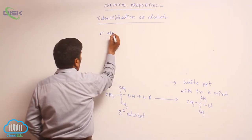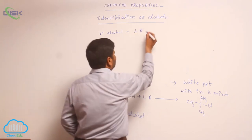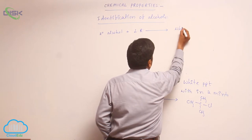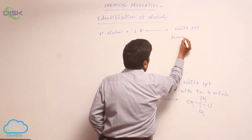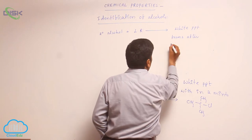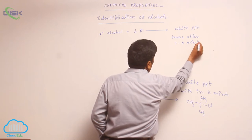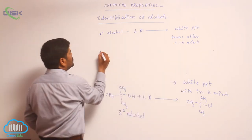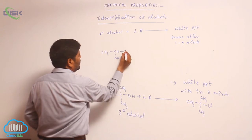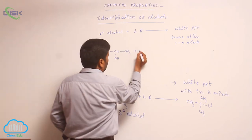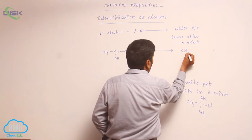For secondary alcohol, when it reacts with Lucas reagent (LR), white ppt forms after three to five minutes. The secondary alcohol reacts with Lucas reagent and converts into an alkyl halide.